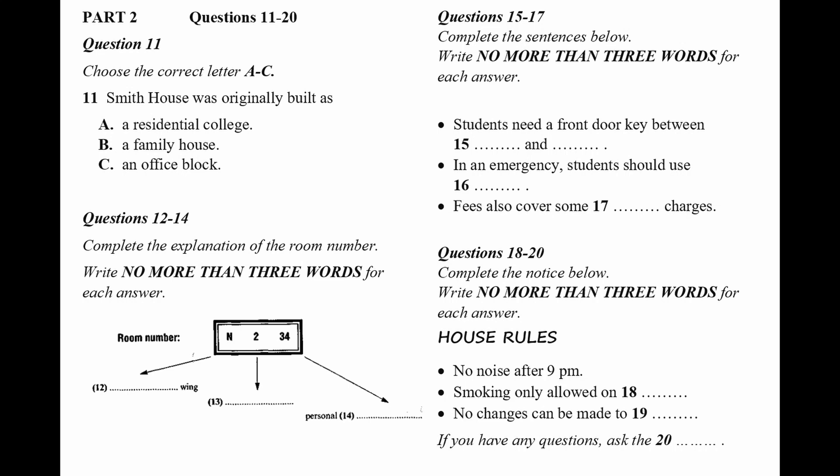If you're unsure about things, each floor has an elected floor senior, who is usually a student in their third or fourth year of study, who's been at Smith House for a while. The floor seniors will introduce themselves later today and answer any questions you have. But for now, I'm going to hand you over to Marnie, who is going to give you the orientation packs and keys. Thanks, Marnie. That is the end of Part 2. You now have half a minute to check your answers to Part 2.